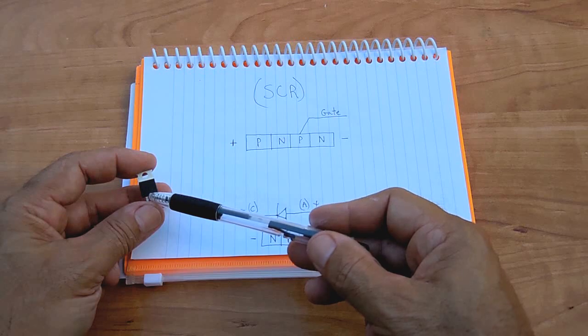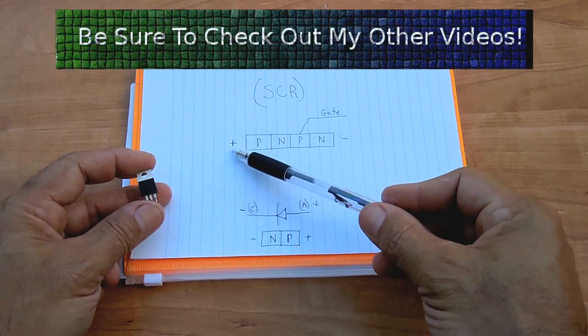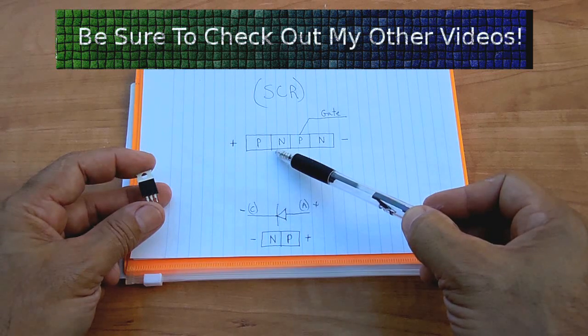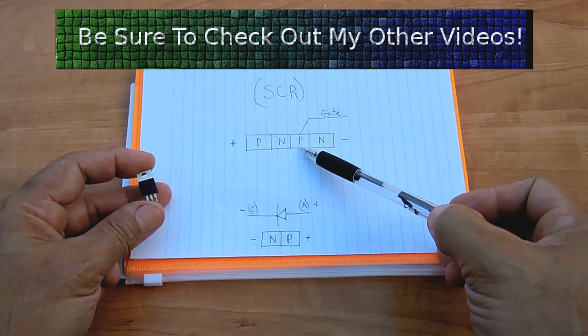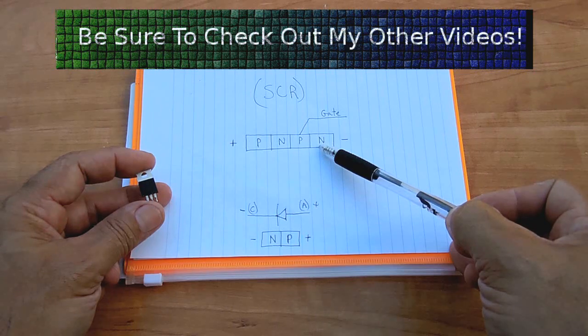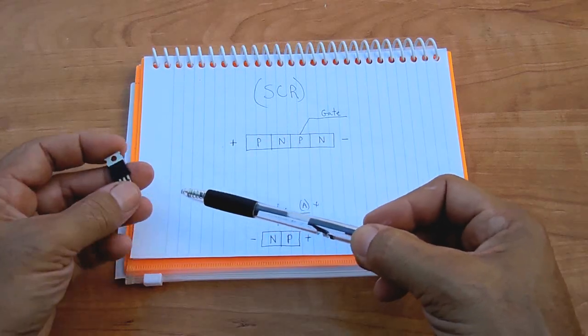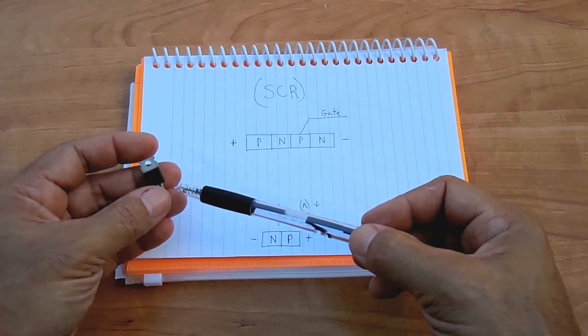Usually there are four layers. Closest to the anode you would have a P type layer, then you would have an N type layer, and next to that would be a P type layer, and then another N type layer next to the cathode.